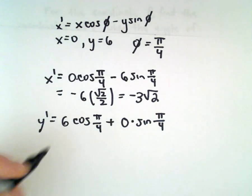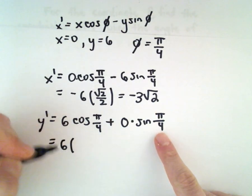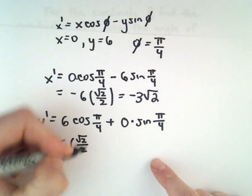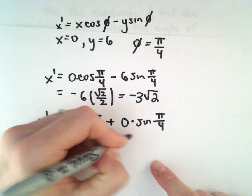So in this case, the second term will be 0. We'll have 6 multiplied by cosine of pi over 4, which is root 2 over 2, and that'll be 3 times root 2.